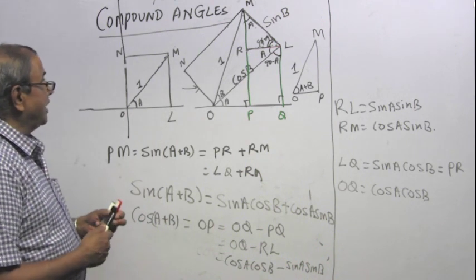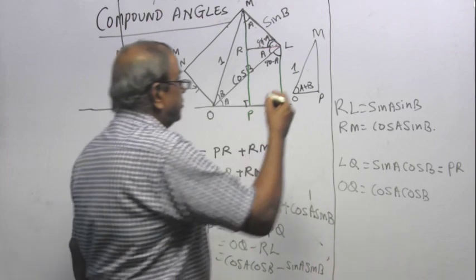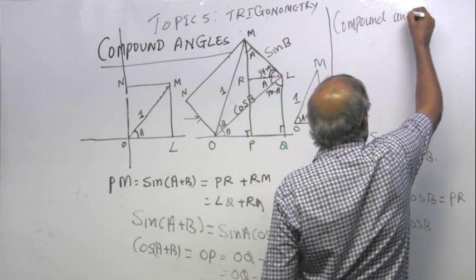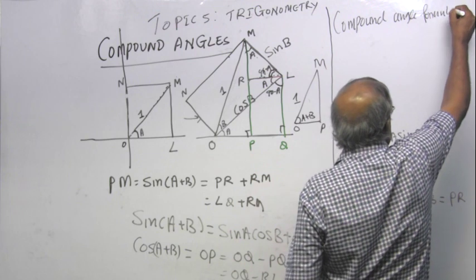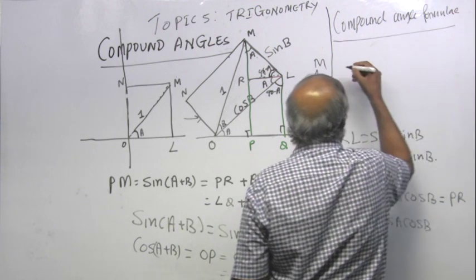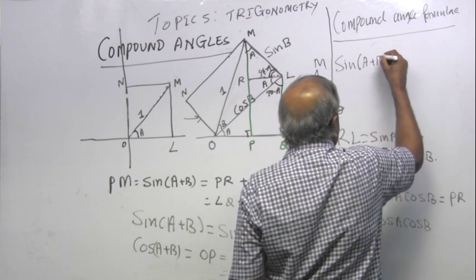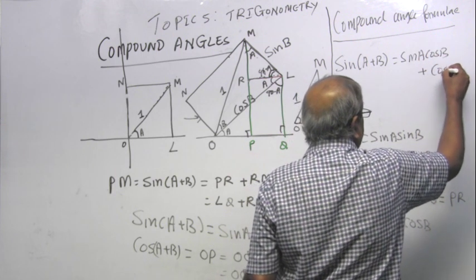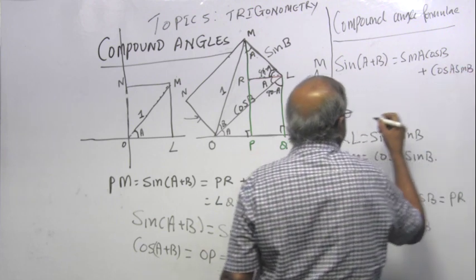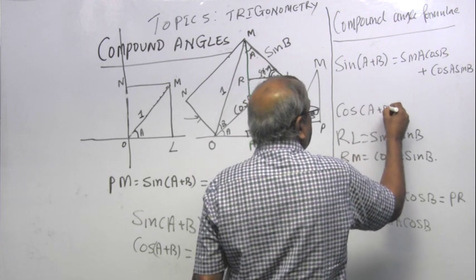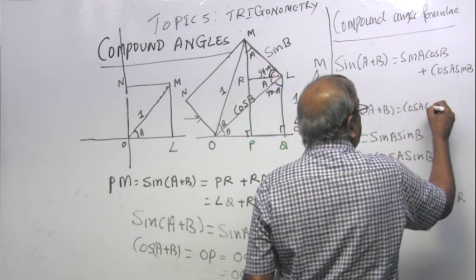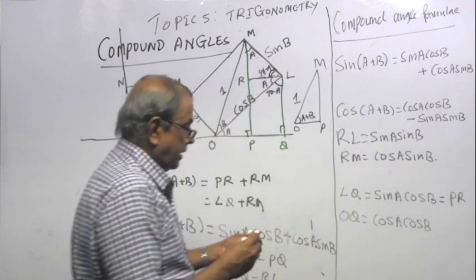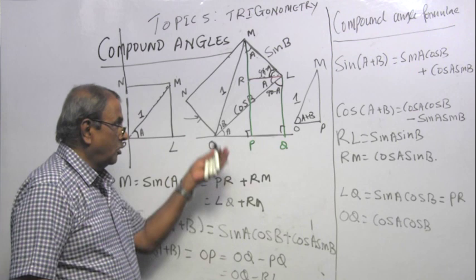So OQ minus RL. What is OQ? Cos A cos B minus RL is sin A sin B. That is the formula which you have learnt. That is how you get the formula for sin of A plus B and cos of A plus B.